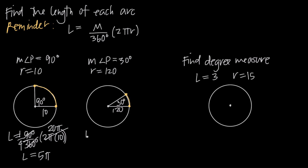The arc length is going to be L equals the interior angle measure, or 30 degrees — so 30 degrees over 360 degrees multiplied by 2πr, or 2π times 120. And 30 degrees over 360 degrees is going to simplify to 1 over 12.